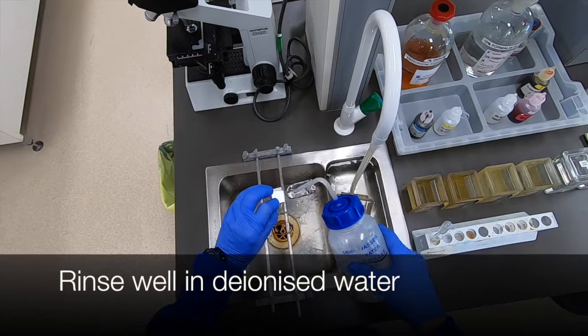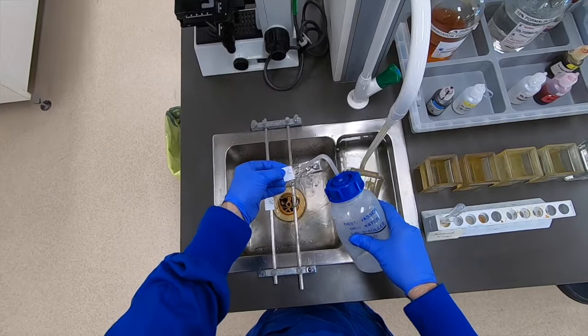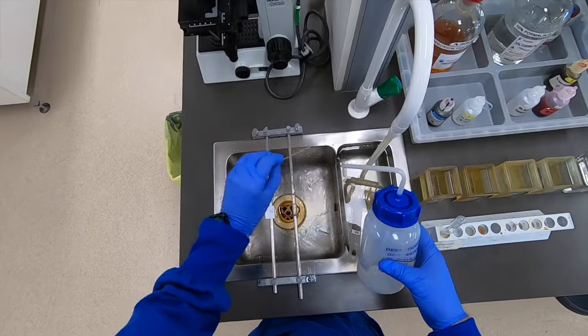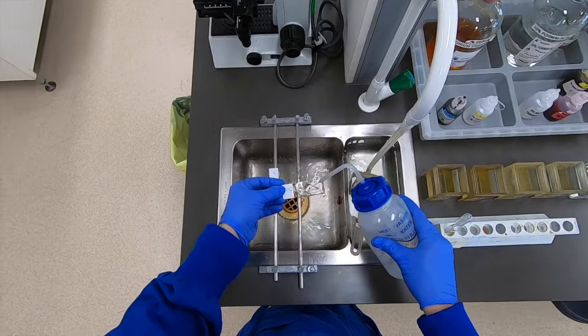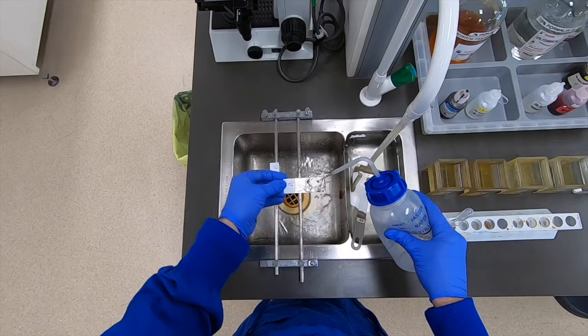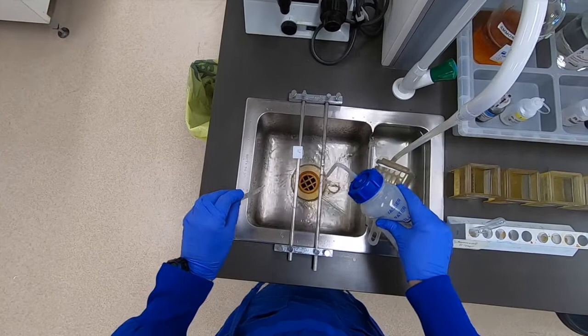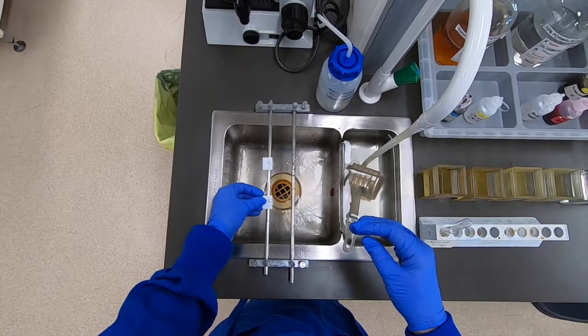Following that we rinse well in deionized water once again. Now whilst it's important to rinse the slides well before going into the silver, which is the next step, there is evidence to suggest that over-rinsing can remove too much of the iron alum and can subsequently result in poor staining. So this is certainly a step that is worth doing a bit of experimentation to see how little or how much is too much.